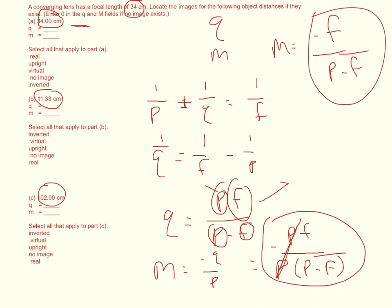When you get that, what that is telling you is that no image is formed in that situation. No image is formed. So on part A, you get Q is equal to 0, M 0. It's not equal to 0. It just doesn't exist. That's no image is formed. And so you select no image.